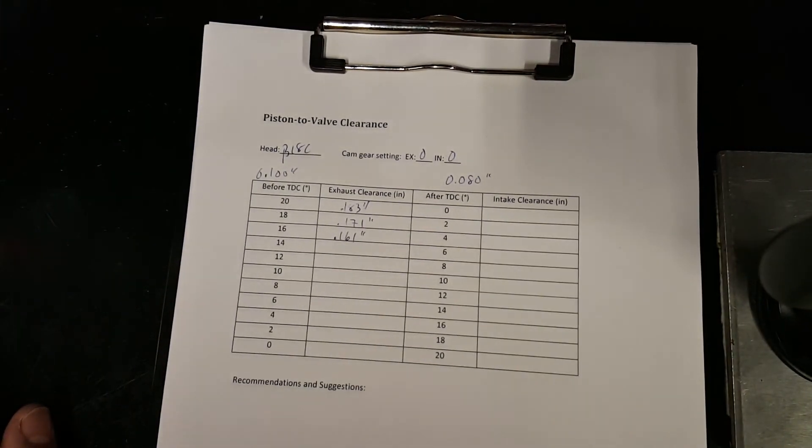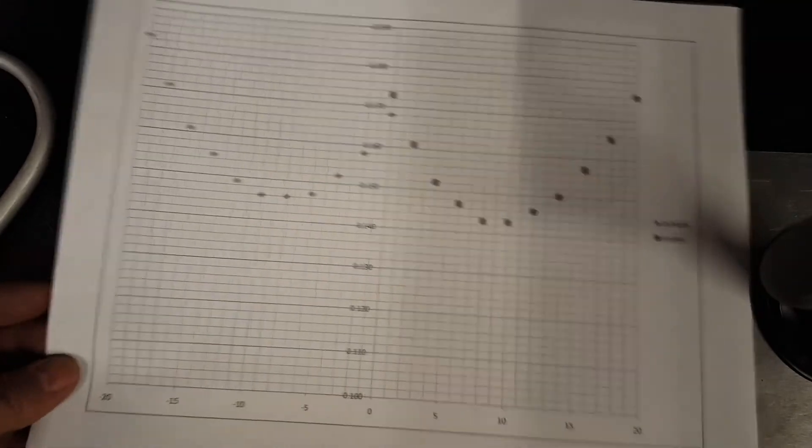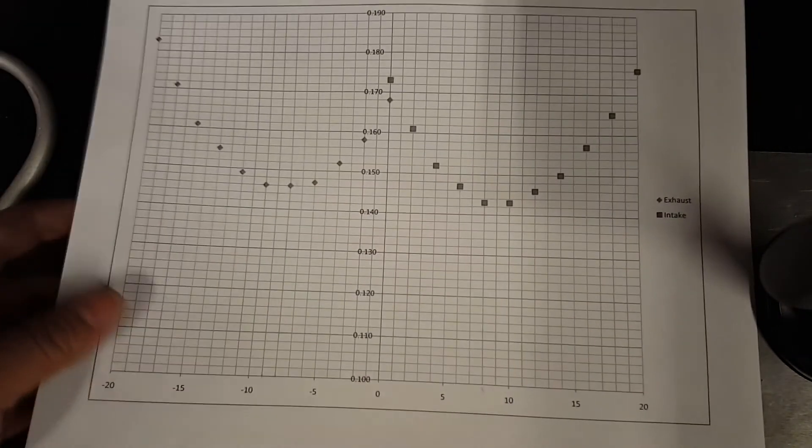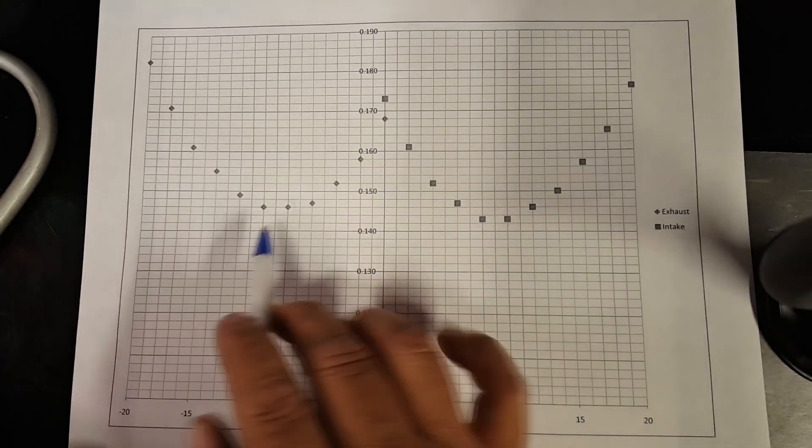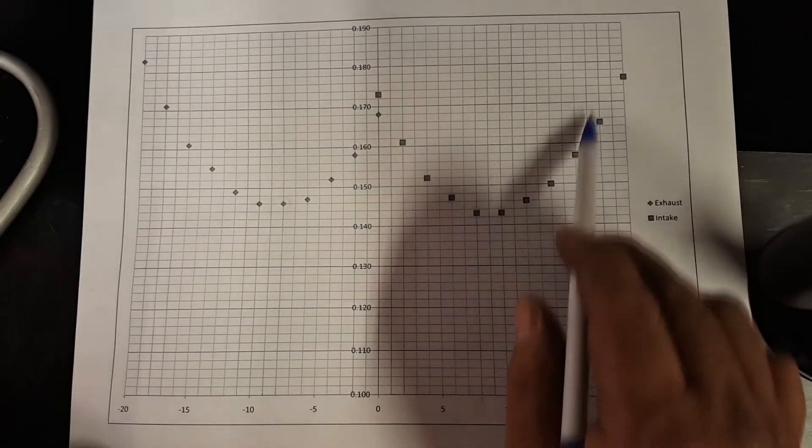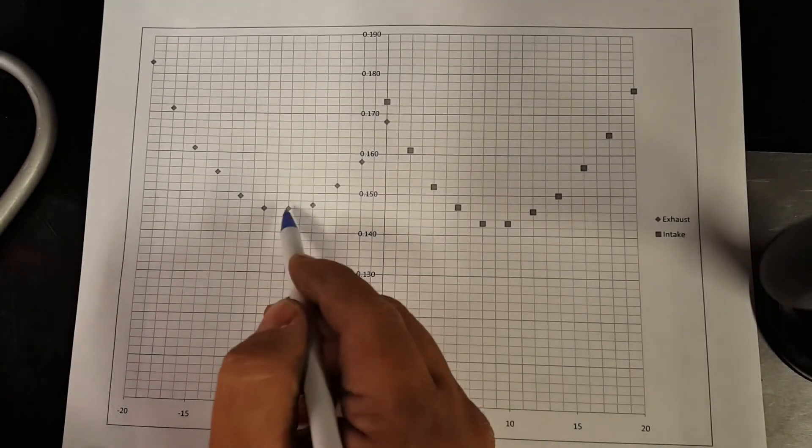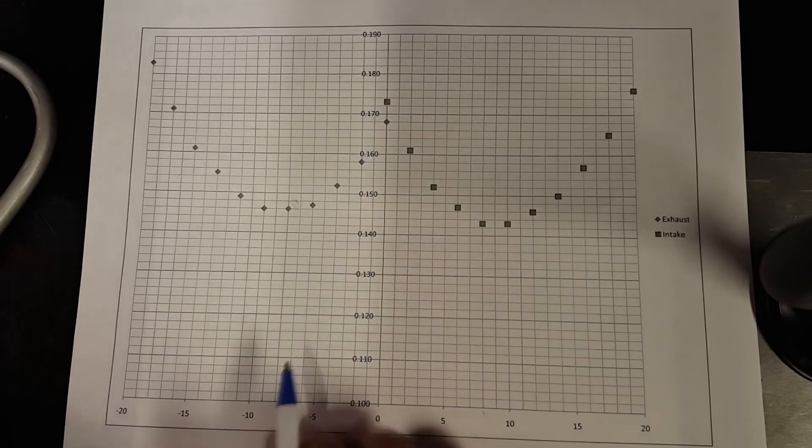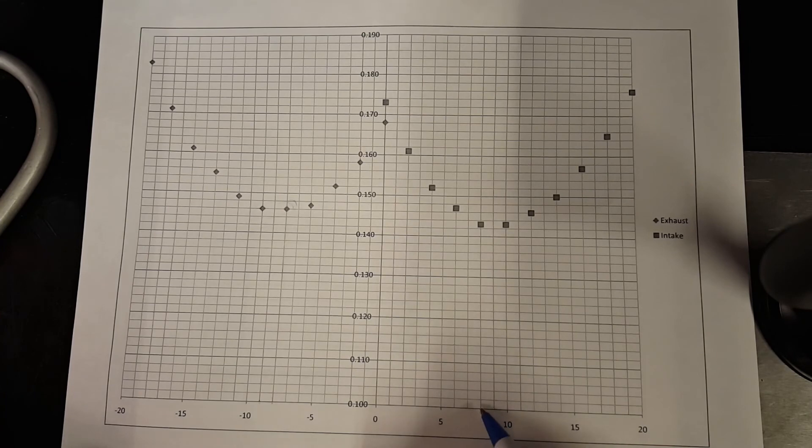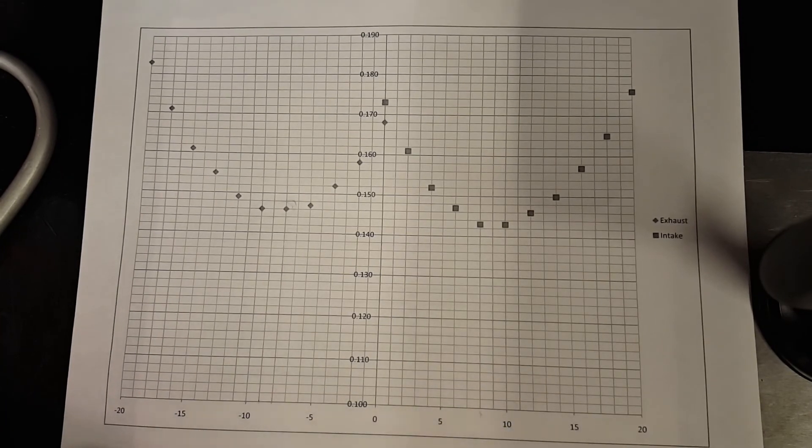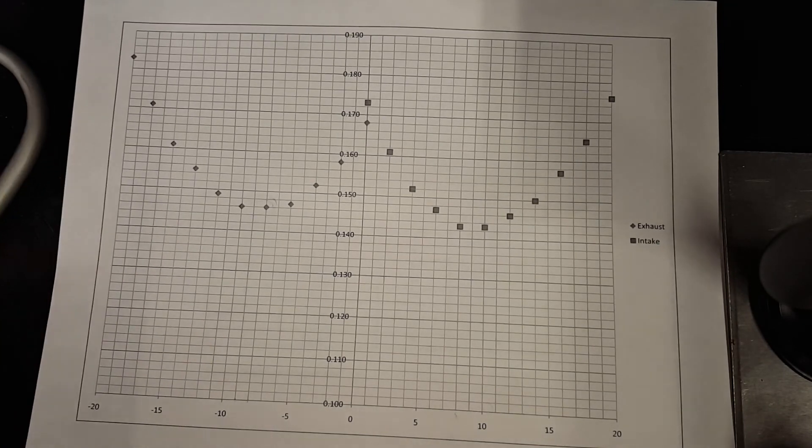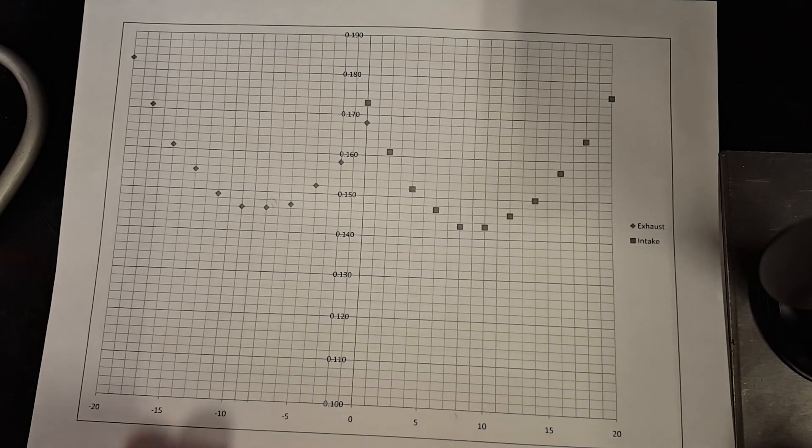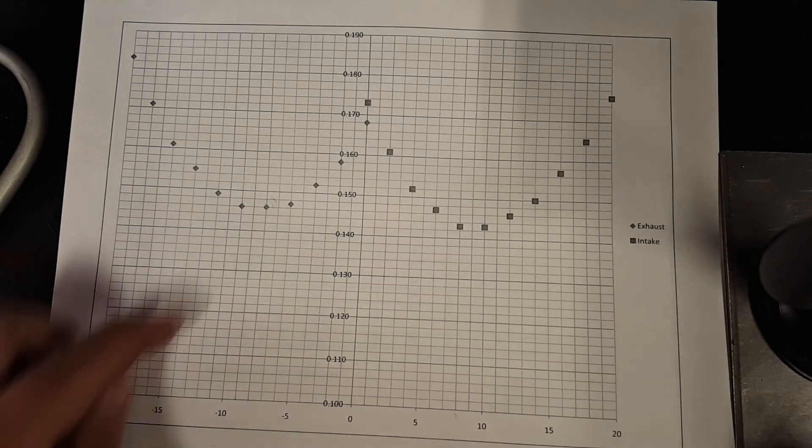Here's what it looks like after plotting these points into an Excel sheet and graphing it. I use negative 20 to signify before top dead center. This is the exhaust side and this is the intake side. They are closest at 10 and 8 degrees before top dead center for the exhaust side. This gives you a better idea of what it's doing as it gets closer to that - it comes down. The degrees are getting smaller for the exhaust. You can kind of see where your clearance is at.